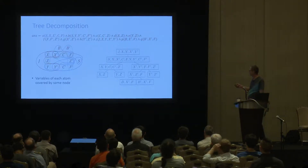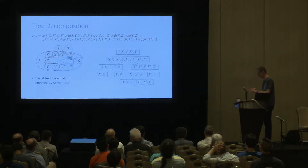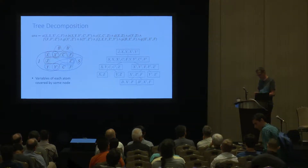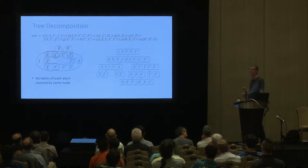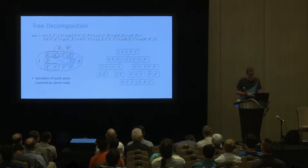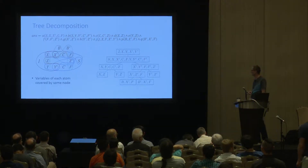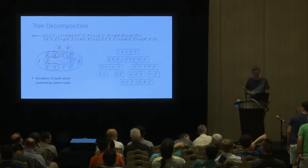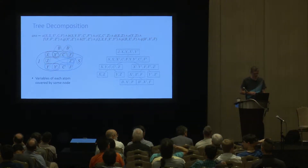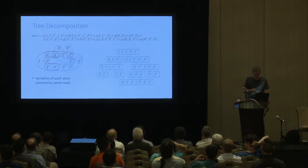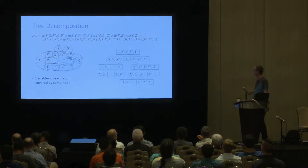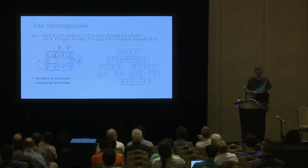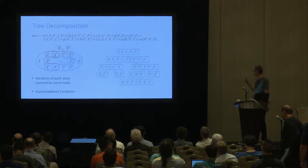I highlighted the first atom and the corresponding hypergraph edge. Unfortunately the laser pointer is not visible on screen. But you would see that the variables of the first atom are in fact covered by the root node of the tree decomposition — specifically, the child of the root node. If we look at the second atom, we notice it's also covered by the child of the root node of the tree decomposition, and so on.